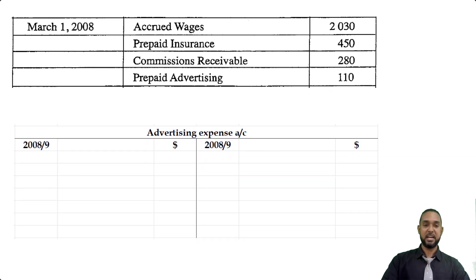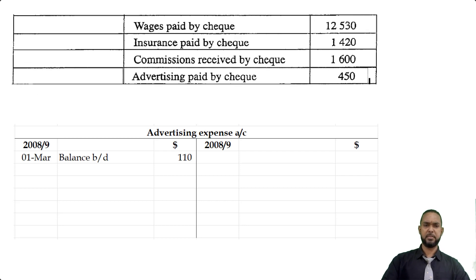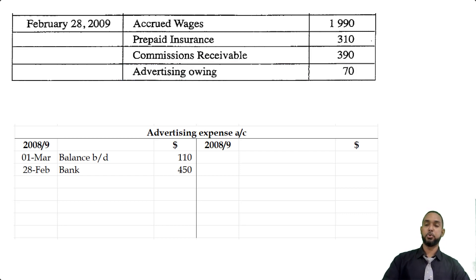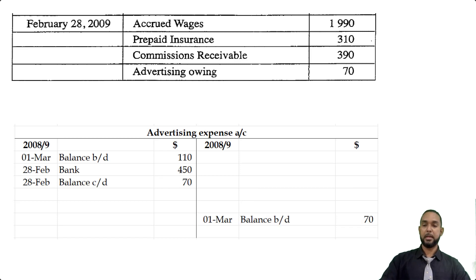The last item is the advertising expense account. The opening prepaid balance goes on the debit side because prepaid expenses are assets with debit balances. Advertising paid by check — $4.50 — also goes on the debit side. The closing balance is advertising owing, meaning it's accrued advertising — a liability with a credit balance, carried down from the debit side. Adding up everything on the debit side gives the total, which matches the income statement figure.